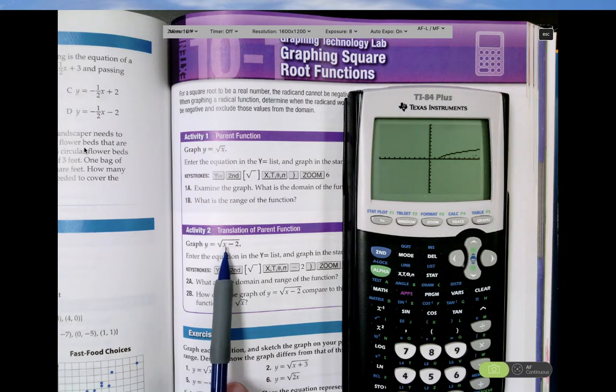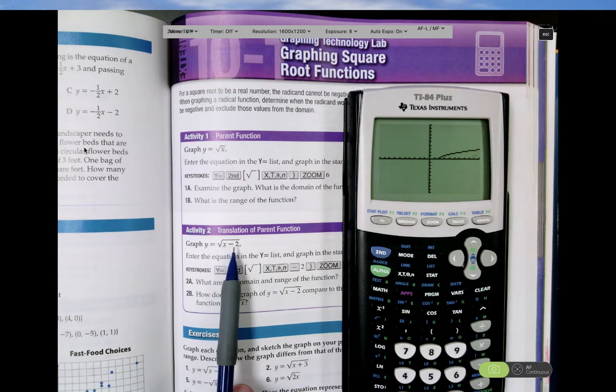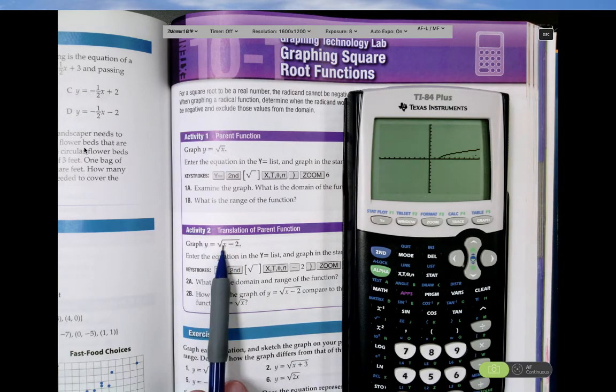If I put positive 2 in for x, does that work? Yes. If I put positive 2 minus 2 is 0. So when x equals positive 2, I have the square root of 0 under the radical, which is 0. So when x equals positive 2, y equals 0.